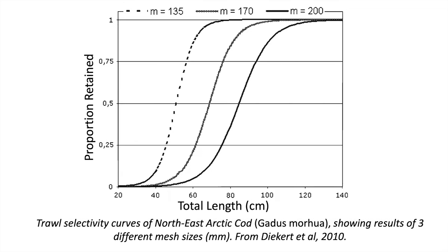This is a typical selection curve for a trawl fishery. Note that after a certain mesh size, all fish will be retained as they cannot escape the net. Another name for these selection curves is contact selection curves, as they are based on the probability of capture given a fish has contacted the gear. It's important to note that these selection curves are independent of the population, since it's just a probability of catching the fish.